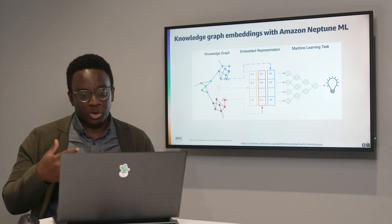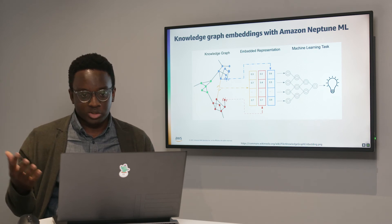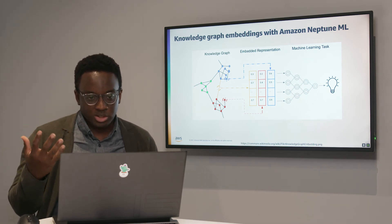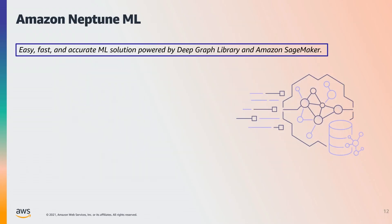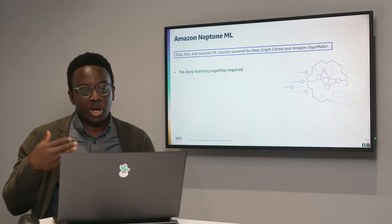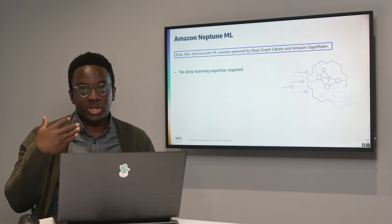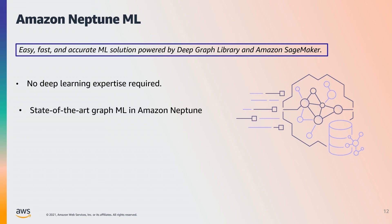I'll show how we can use derived knowledge graph embeddings to power out-of-catalog search. To create these embeddings, I'll introduce Amazon Neptune ML, a solution built on top of Amazon Neptune that uses state-of-the-art deep learning algorithms to produce representations for nodes and relationships in your graph. Even though Neptune ML uses state-of-the-art graph neural networks, you don't need any deep learning expertise — it's just a couple of API calls. Neptune ML also scales to very large graphs, including those with billions of nodes and tens of billions of edges.